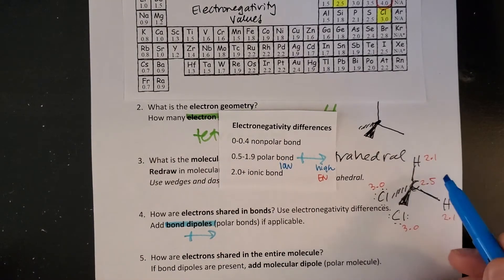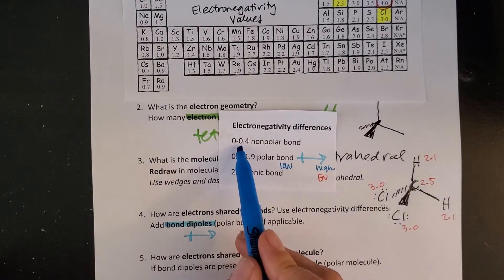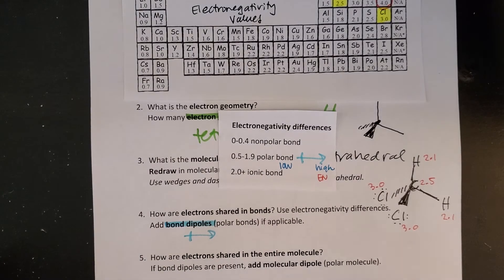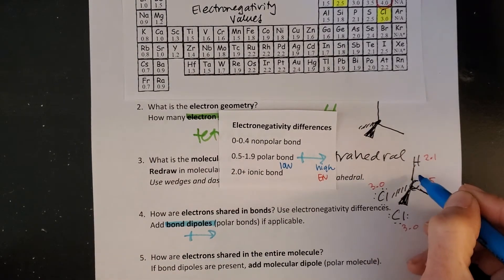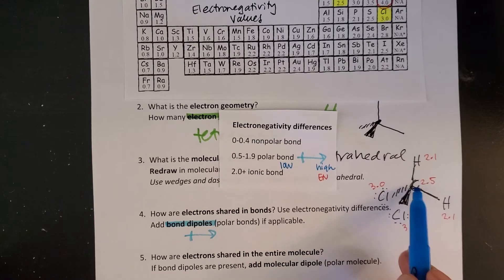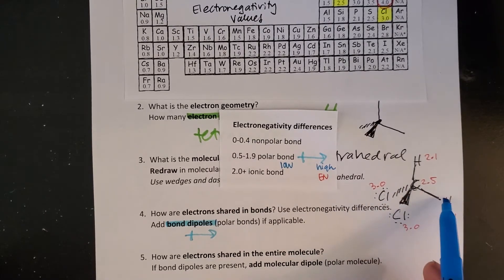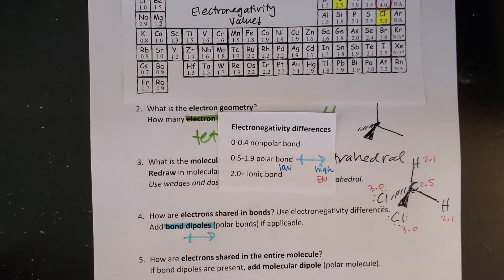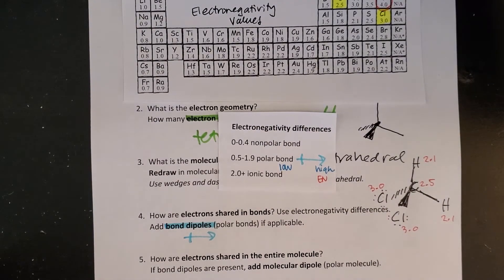So let's look at C-H: 2.5 minus 2.1 gives me 0.4 which is therefore a non-polar bond. That means I'm going to treat those as if the electrons are shared evenly. Same with the other C-H: 2.5, 2.1 so electrons are shared evenly. We are always going to treat C-H bonds as non-polar so you will never put a bond dipole on the C-H bond.